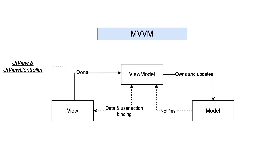Let's now explore the MVVM design pattern, which stands for Model-View-ViewModel. MVVM shares similarities with MVP — the view controller is treated as a view, and there is no tight coupling between the view and the model. The main difference is that it has binding between the view and the view model. The view model is basically a UIKit-independent representation of your view and its state. The view model invokes changes in the model and updates itself with the updated model, and thanks to the binding, the view is automatically updated accordingly.